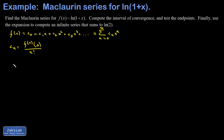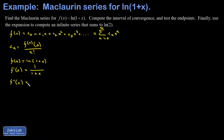I'm going to make a list of all these successive derivatives of natural log of 1 plus x, starting with just the function itself. The first derivative is just 1 over 1 plus x. To find the second derivative, I view that as 1 plus x to the negative 1 power and use the power rule. So I get negative 1 plus x to the negative 2, which is negative 1 over 1 plus x quantity squared.